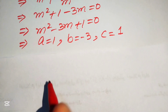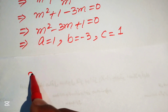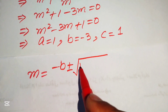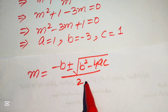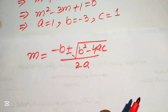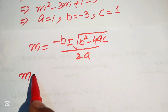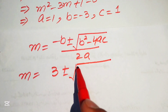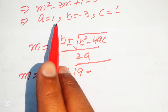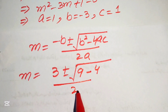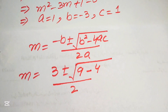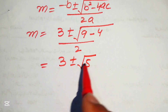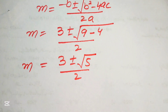Using the quadratic formula m = (-b ± √(b² - 4ac)) / 2a, we substitute b = -3, a = 1, c = 1 to get m = (3 ± √(9 - 4)) / 2 = (3 ± √5) / 2.